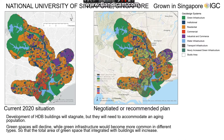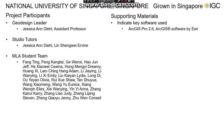Focusing on the comparison between the current situation and recommended plan, the most obvious feature is the appearance of different types of urban agriculture-related green infrastructure contributing to the increasing total area of green space in future Singapore. That's all of our team Grown in Singapore project presentation. Thanks for listening.